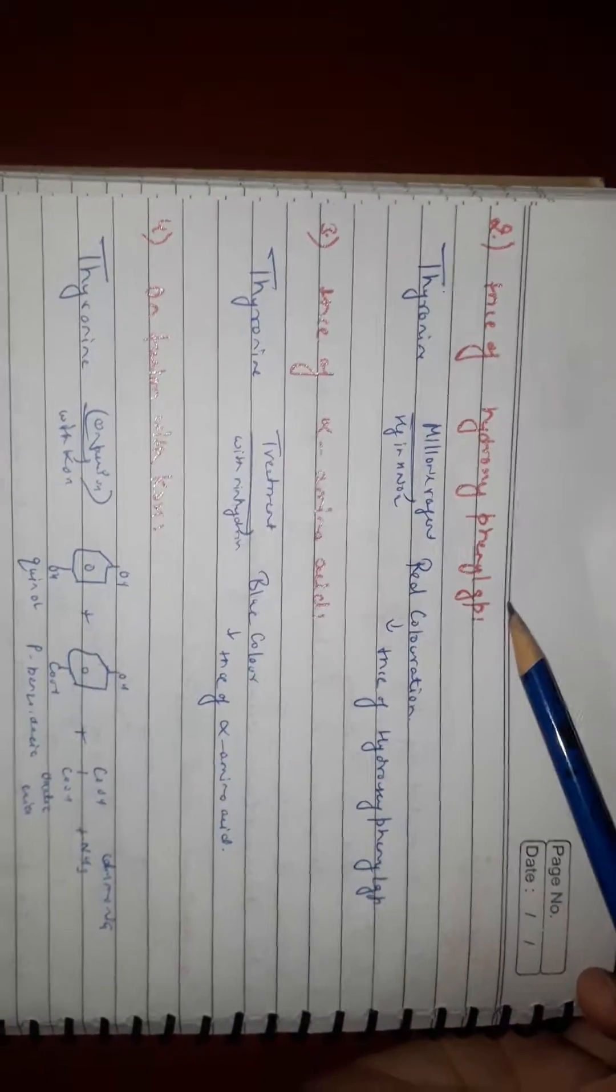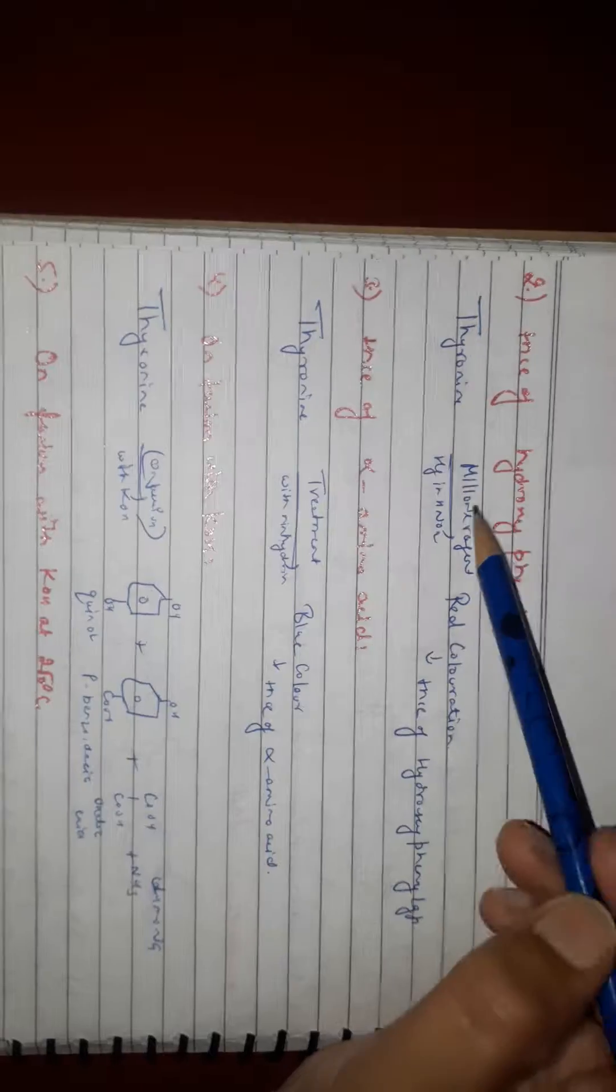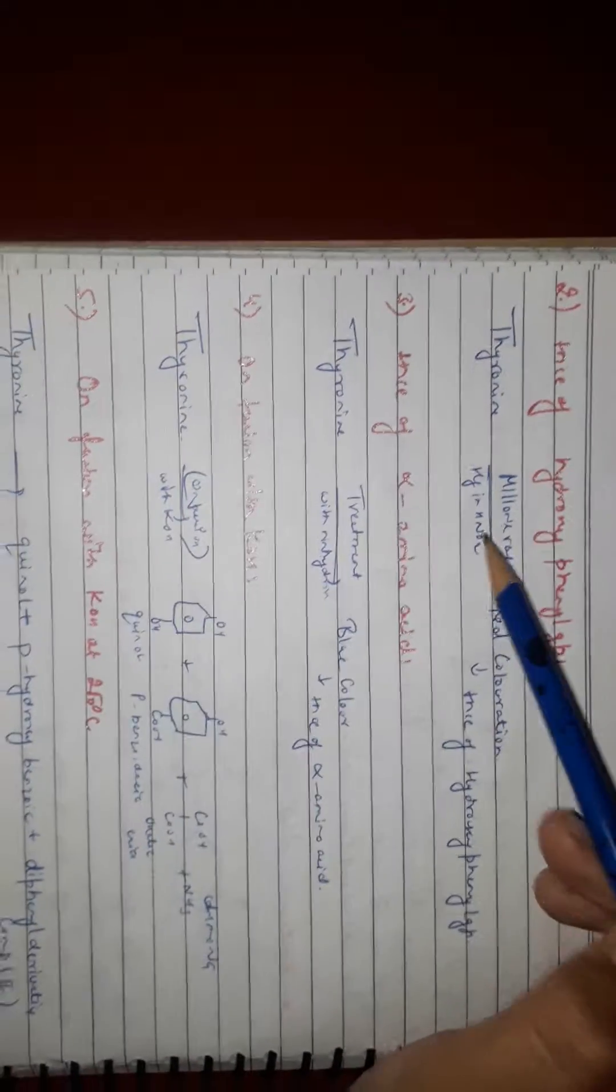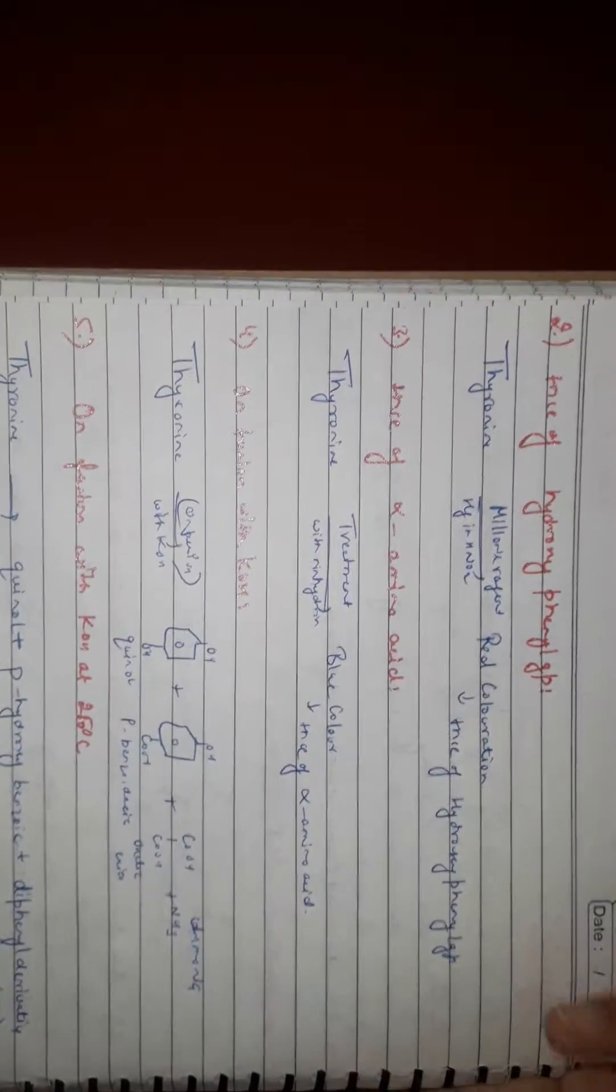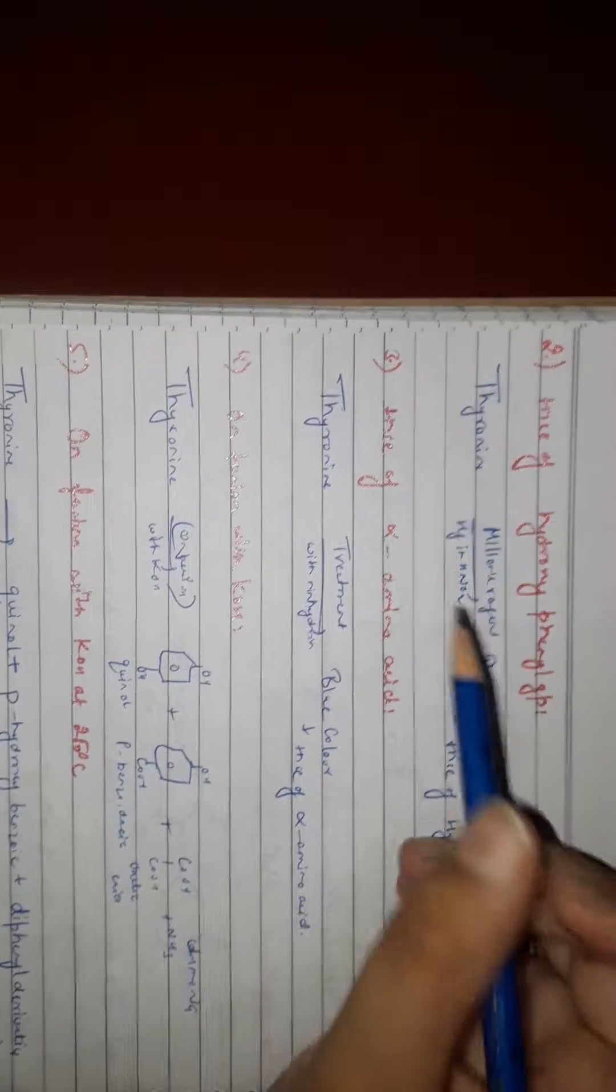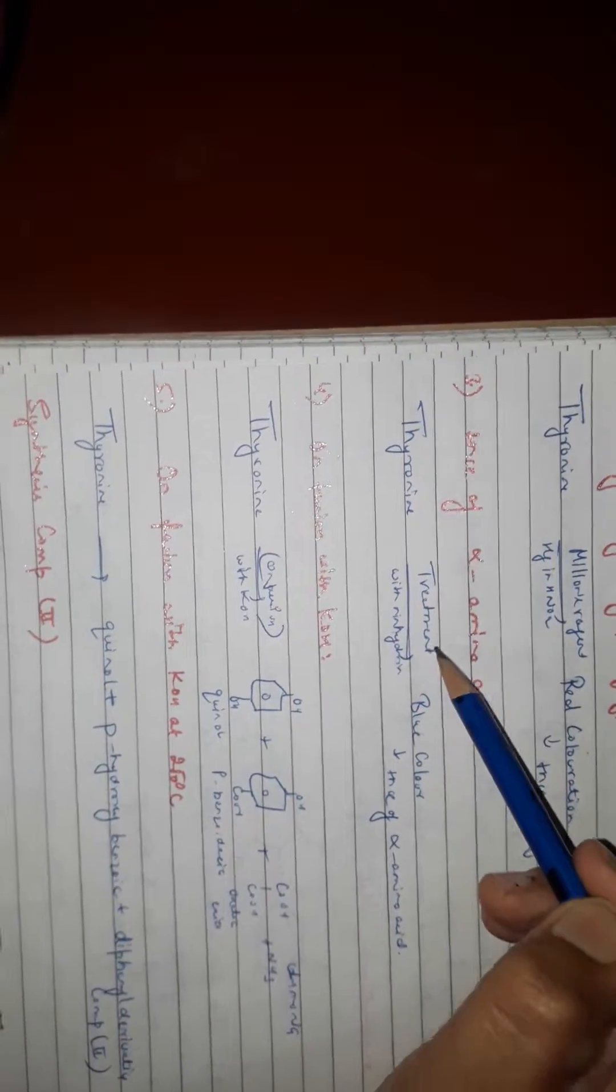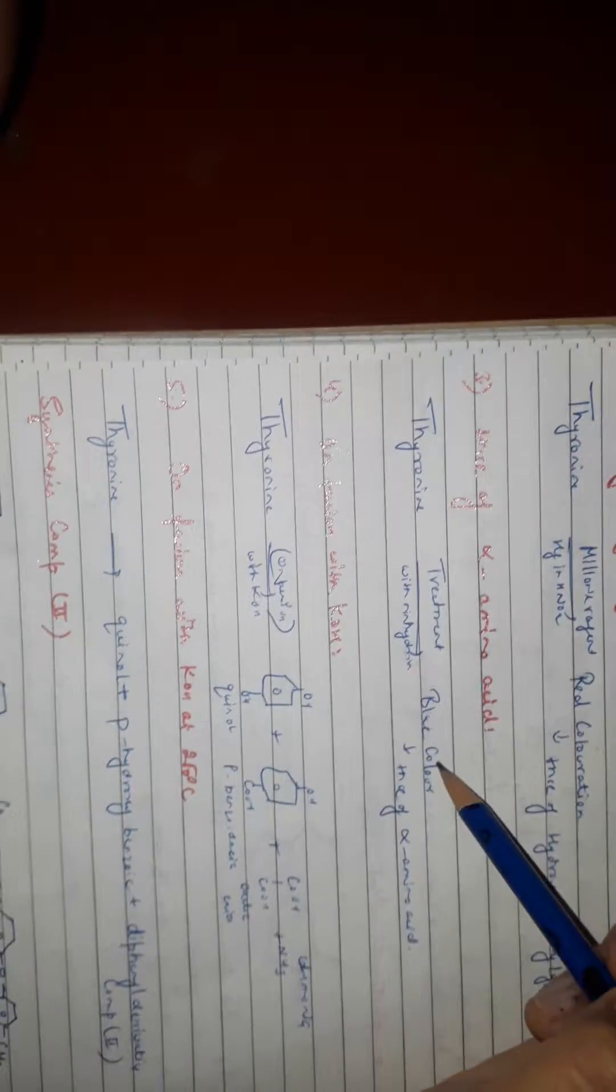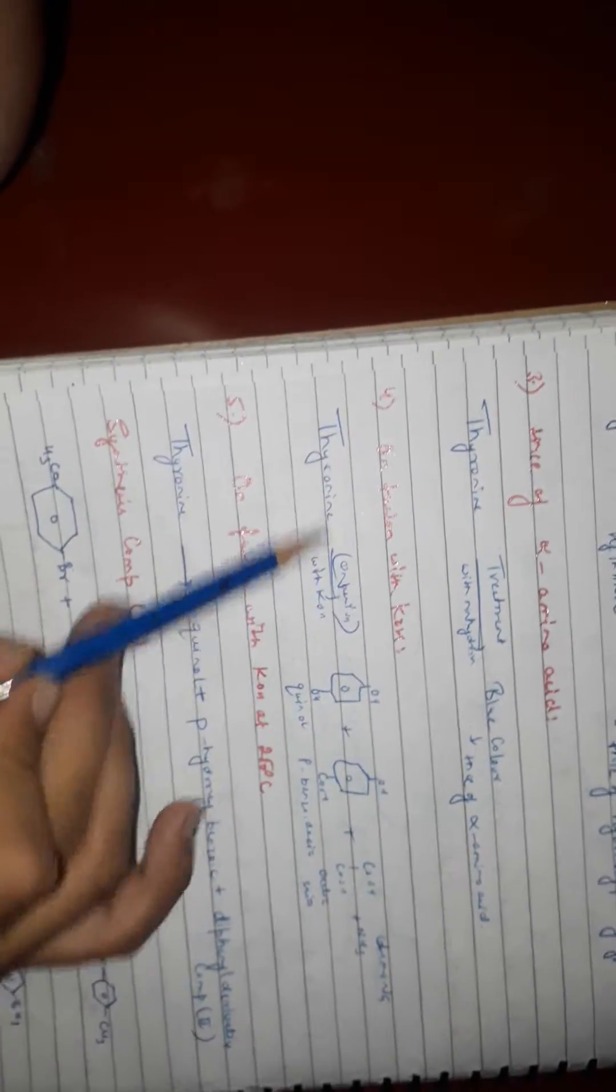Presence of hydroxyl phenyl group: thyronine with Millon's reagent (Hg in HNO3) gives red color, showing hydroxyl phenyl group is present. Alpha amino acid: treatment with ninhydrin gives blue color, indicating presence of alpha amino acid.